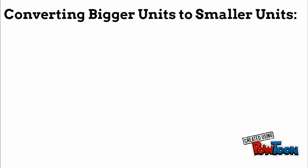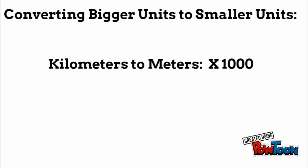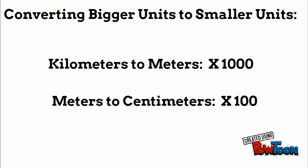To sum it up: when converting bigger units to smaller units, you can multiply. Kilometers to meters — multiply by 1,000 because there are 1,000 meters in a kilometer. Meters to centimeters — multiply by 100 because there are 100 centimeters in one meter. Thanks for watching, see you next time.